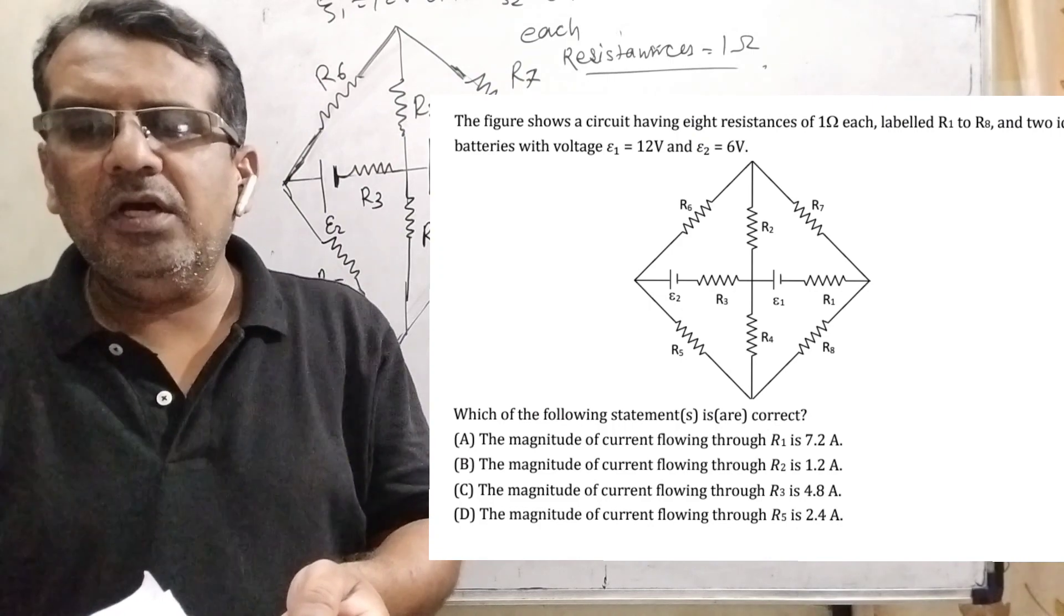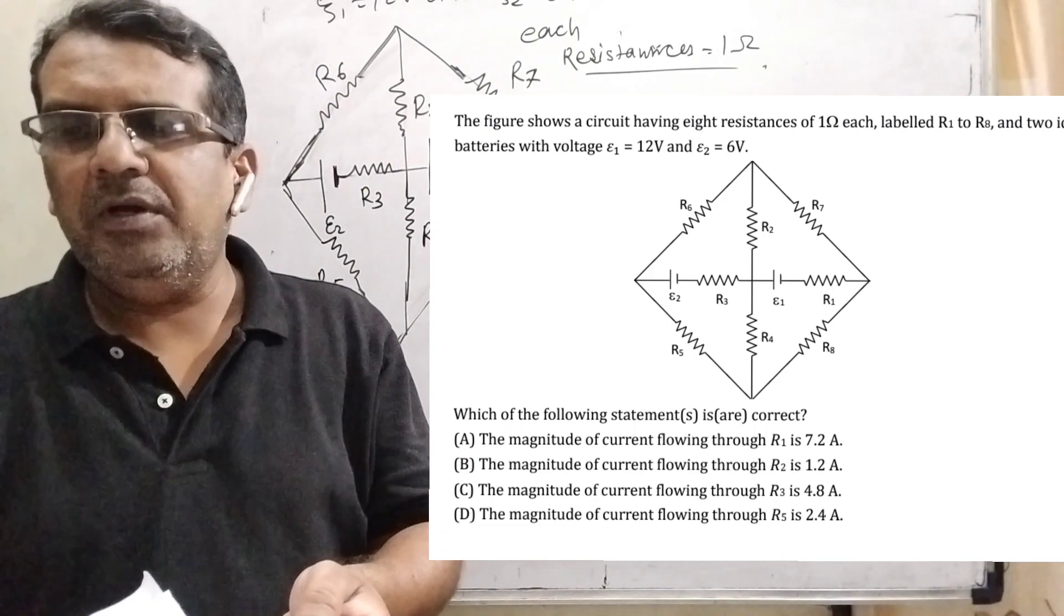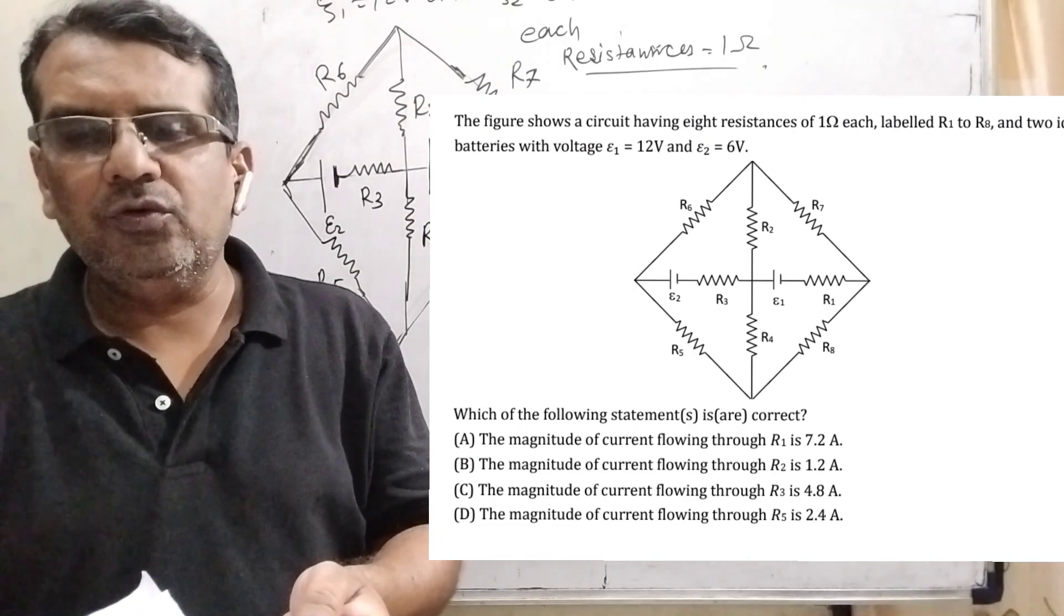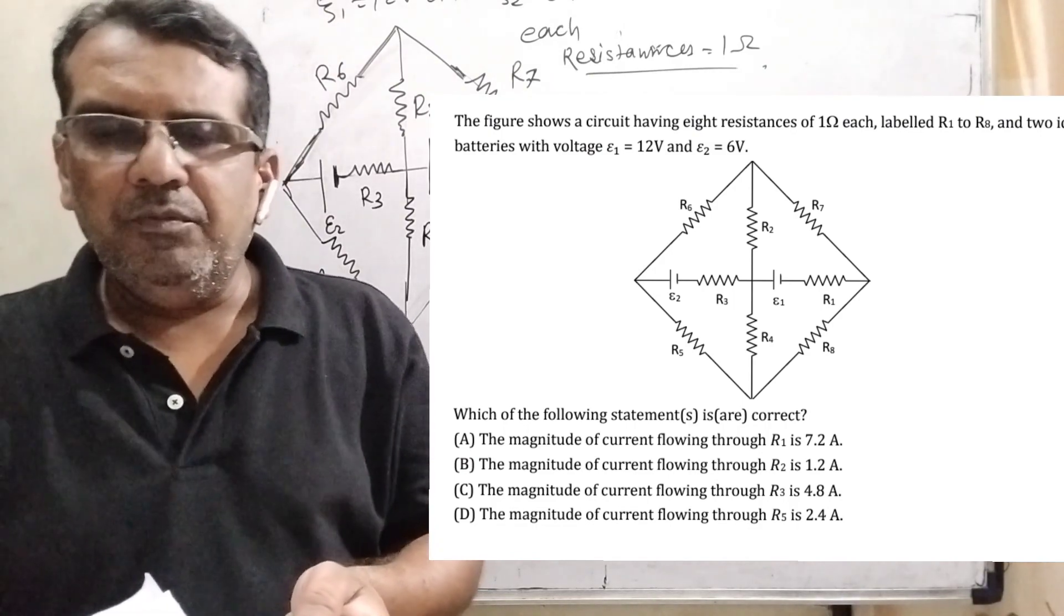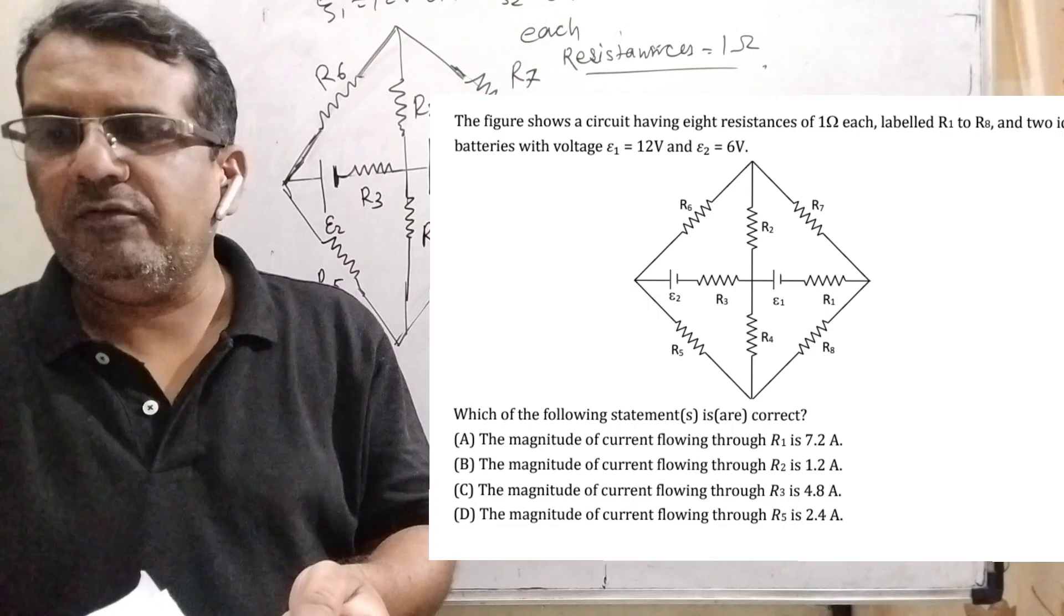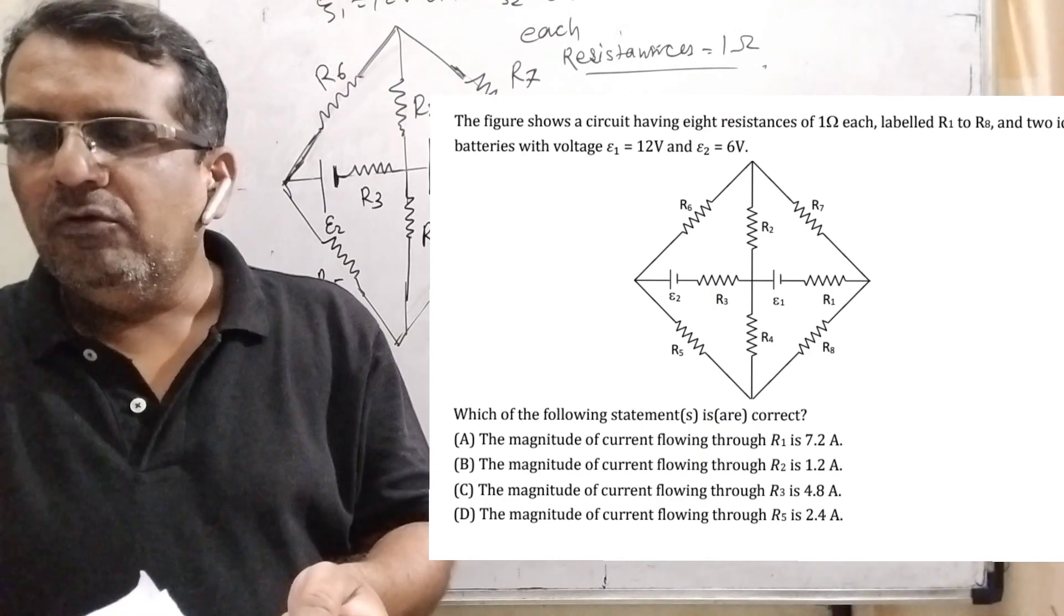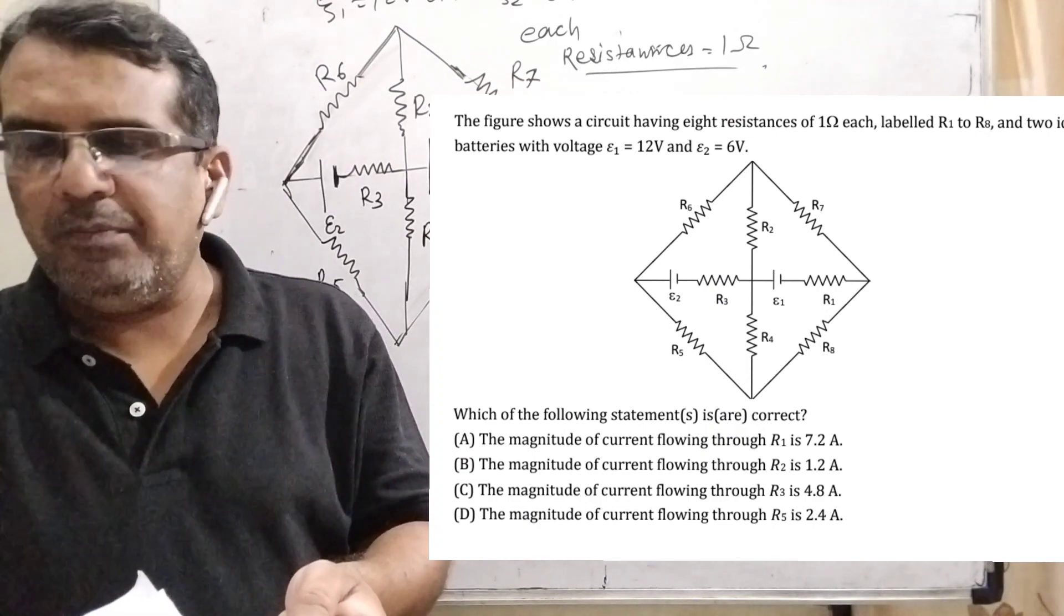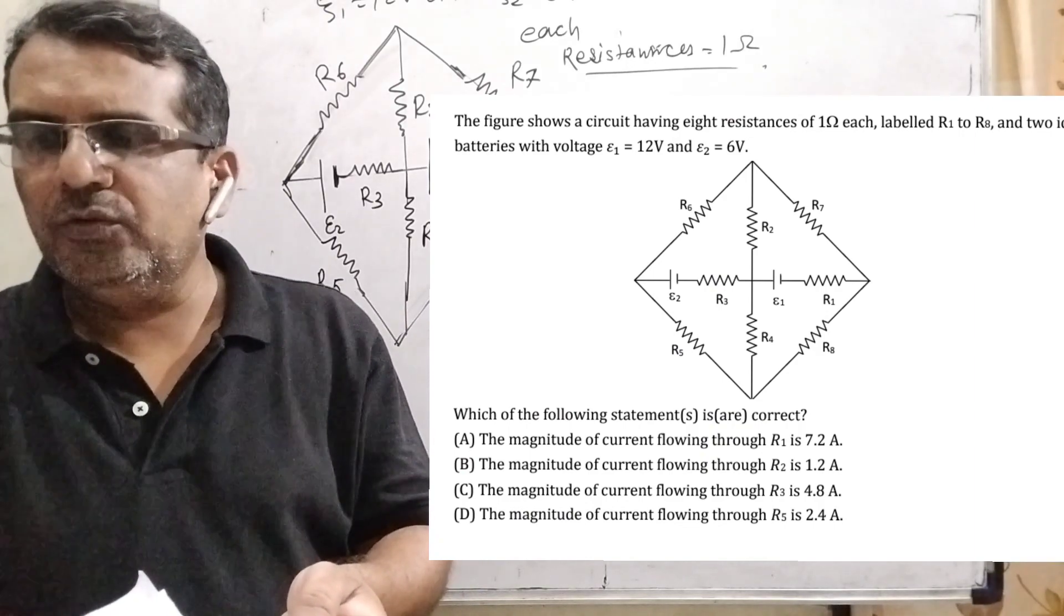Now here is the question. The figure shows a circuit having 8 resistances of 1 ohm each, labelled R1 to R8, and 2 ideal batteries with voltage E1 equal to 12 volts and E2 equal to 6 volts. The options are multiple choice questions: The magnitude of current through R1 equals 7.2 amperes. The magnitude of current through R2 equals 1.2 amperes. The magnitude of current through R3 equals 4.8 amperes. And the magnitude of current through R5 equals 2.4 amperes.